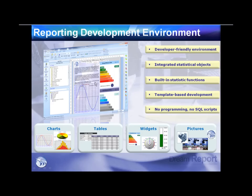The kinds of objects available include charts — bar charts, pie charts, line charts — tables, statistical tables, different graphical widgets, indicators, meters, and any pictures or backgrounds you might want to include in your reports.